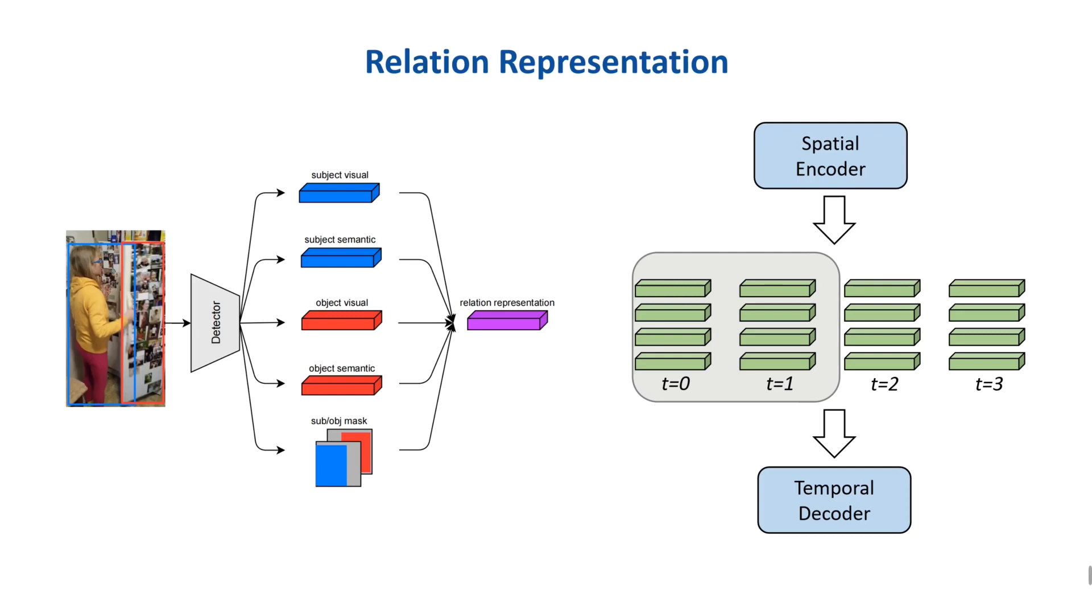A sliding window with fixed size runs over the output of the spatial encoder so that the message is passed between adjacent frames to avoid inference with distant frames and save memory.